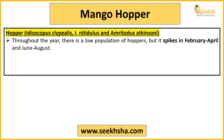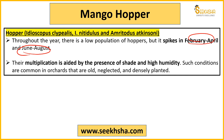Throughout the year they will be living in low population, but the population spike is two times in the year. One is February to April — you will see population increase at a lot of speed. And one is June to August. So the mango orchardist should be most careful about this particular pest related to these seasons: one is February to April and one is June to August.